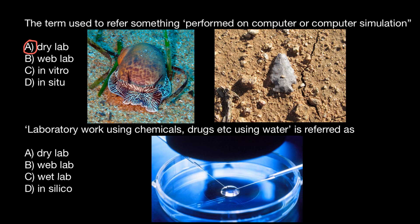Next question: laboratory work using chemicals, drugs, and water is referred to as what? The same answer options apply. I want to comment that dry lab and in silico mean the same thing — computer simulation or work done on computers using computer models. They are synonyms. The correct answer here is wet lab: when you use real chemicals and water, such a lab is called a wet lab.